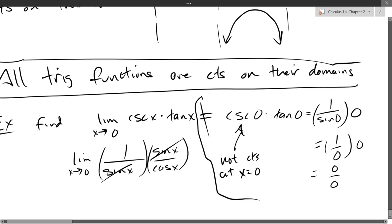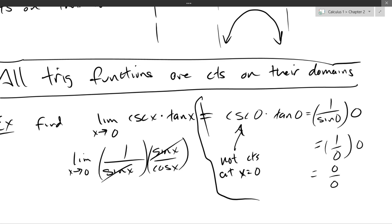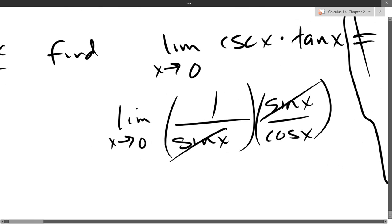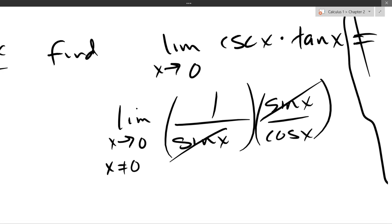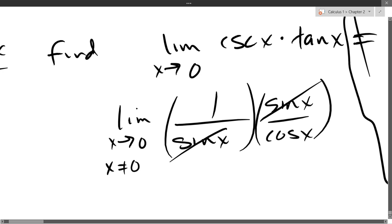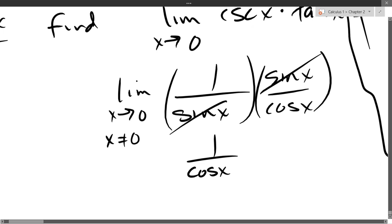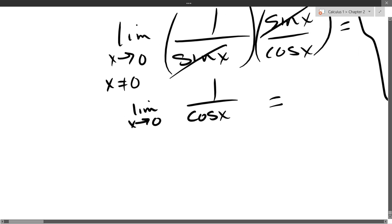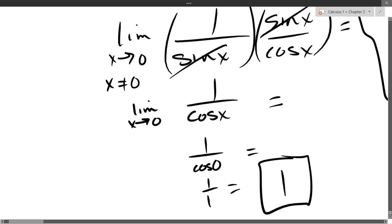Cosecant is 1 over sine, and tangent is sine over cosine. So we get (1/sin x) · (sin x/cos x). I'm going to cancel the sine x's — they cancel out as long as they're not zero. What x value makes sine zero? Zero. But x is approaching zero, not equal to zero. Since we only care about x close to zero for the limit, the cancellation is valid, and we're left with 1 over cos x. Cosine is continuous and cos(0) = 1, so the final limit value is 1.